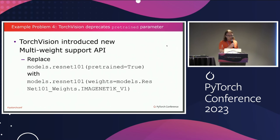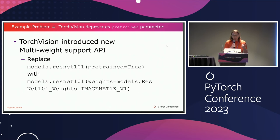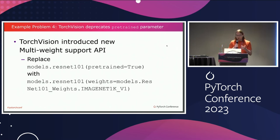This example is not about core PyTorch — it's about the popular domain library TorchVision. Recently in TorchVision, the API for loading pre-trained weights was changed. Previously you provided a boolean: pretrained equals true or false. But with the new API, you provide a weights parameter and specify exactly which weights you want to load. This new API is much more flexible, and we want to update all code to use it. After that, TorchVision can drop support for the old API entirely. Again, it's extremely tedious to do this by hand, especially since TorchVision has many models with many weights and this API change applies to all of them.